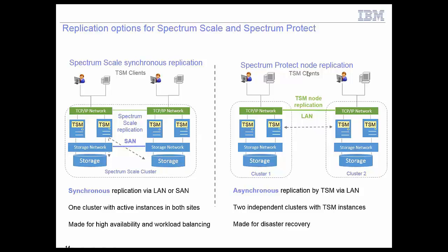The second method is Spectrum Protect node replication, which is asynchronous. You essentially have two independent clusters and Spectrum Protect instances replicate nodes between them. This solution is primarily made for disaster recovery — if one side fails completely, you fail over to the secondary side, but this failover still requires manual intervention. From my perspective, node replication is the most consistent way to replicate data because Spectrum Protect has knowledge about the data and metadata for each object. Spectrum Scale synchronous replication doesn't have this awareness — it knows it has file systems for database and storage pools, but it doesn't understand the concept of transactions within TSM.